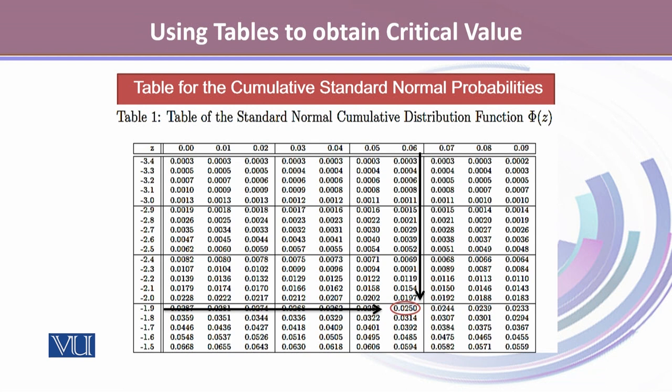Half of 5% is 2.5%. So we look for 0.025 right here. This value 0.025 in the area corresponds to the z-score minus 1.96.